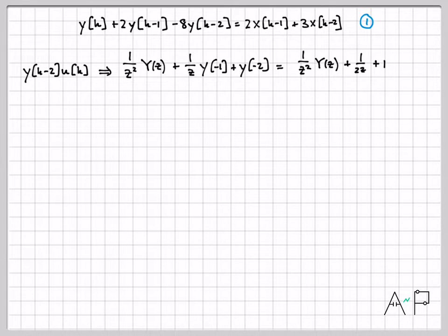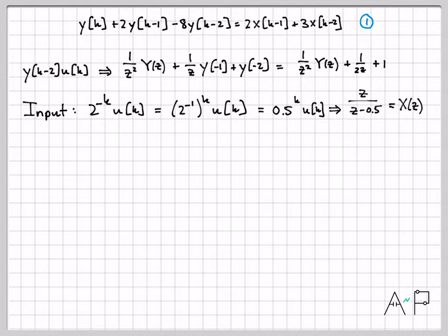Alright, so we've taken the left side of the equation into the Z domain. Let's get the right side as well, which deals with the input signal 2^(-k)u(k). So I need to know what that is in the Z domain. I'm going to rewrite that using properties of exponents to get it into the form that I like. 2^(-1) is a half, so really our input is just (1/2)^k u(k). And that's pretty easy to take into the Z domain. That is z/(z-0.5). So I now know what X(z) is in the Z domain.